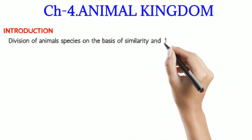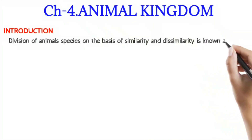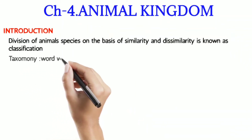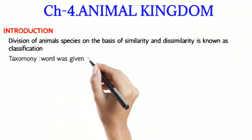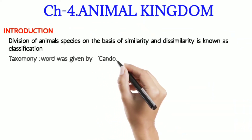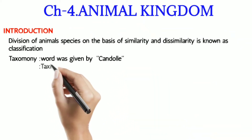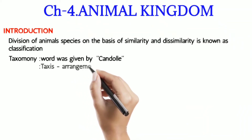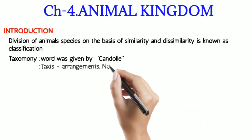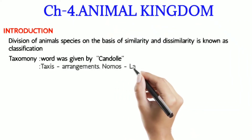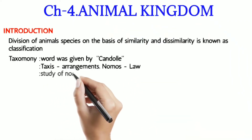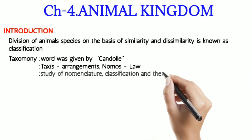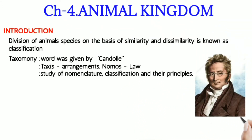The division of animals on the basis of similarity or dissimilarity is known as classification. There is a term called Taxonomy, which was proposed by A.P. de Candolle. The term Taxonomy is made up of two words: Taxis, which means arrangement, and Nomos, which means laws. Taxonomy is basically the study of nomenclature, classification, and their principles.